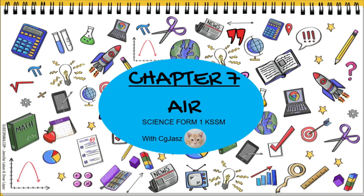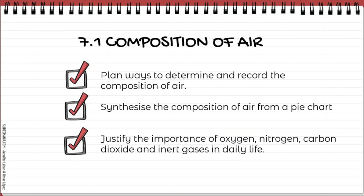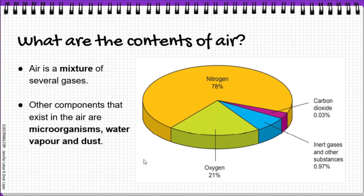Hello everyone. Today we are going to look at Chapter 7: Air. For this chapter we have three subtopics, but for the purpose of this video we'll be looking at the first subtopic, which is the composition of air. By the end of this video, you will be able to plan ways to determine and record the composition of air, synthesize the composition of air from a pie chart, and justify the importance of oxygen, nitrogen, carbon dioxide, and inert gases in daily life.